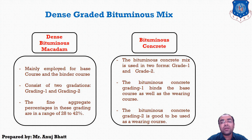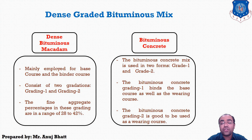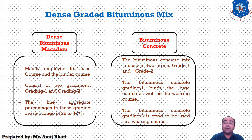Talking about Bituminous Concrete, the BC mix is also used in two different grades — Grade 1 and Grade 2 — wherein Grade 1 has a nominal maximum aggregate size of 19 mm and Grade 2 has 13 mm. As discussed with Dense Bituminous Macadam, Dense Bituminous Mix Grade 2 has larger use as the base course due to its fewer disadvantages compared to Grade 1.